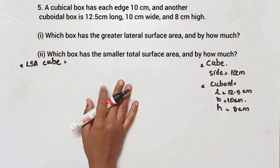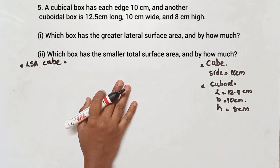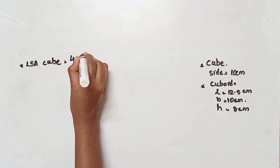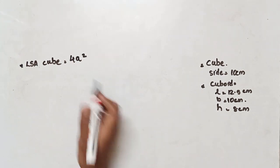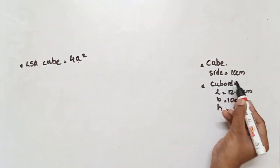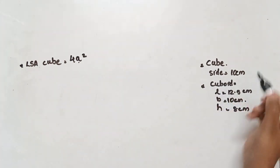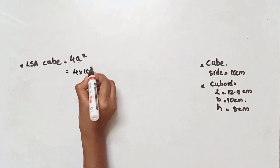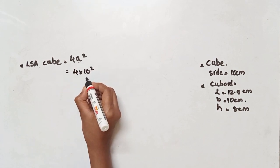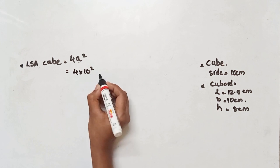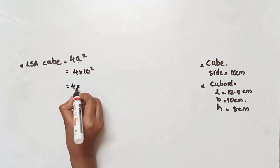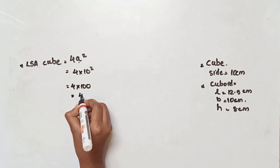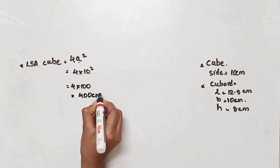What is the formula to find the lateral surface area of a cube? It is 4a squared. So, 4a squared equals 4 × 10 squared. What is 10 squared? 10 × 10 is 100. So it is equal to 4 × 100, which is 400 cm squared.